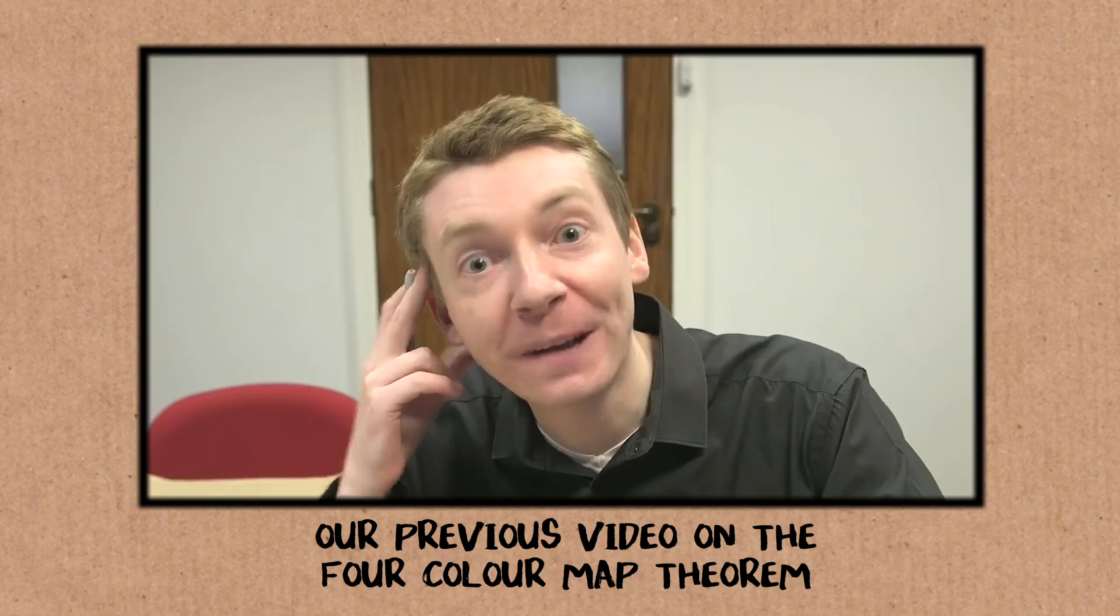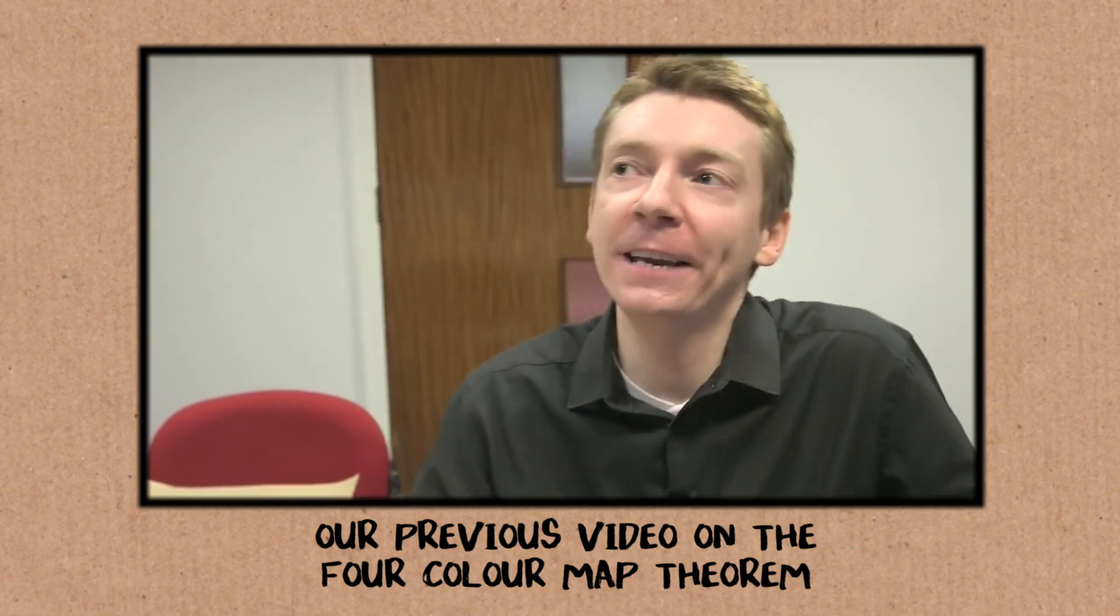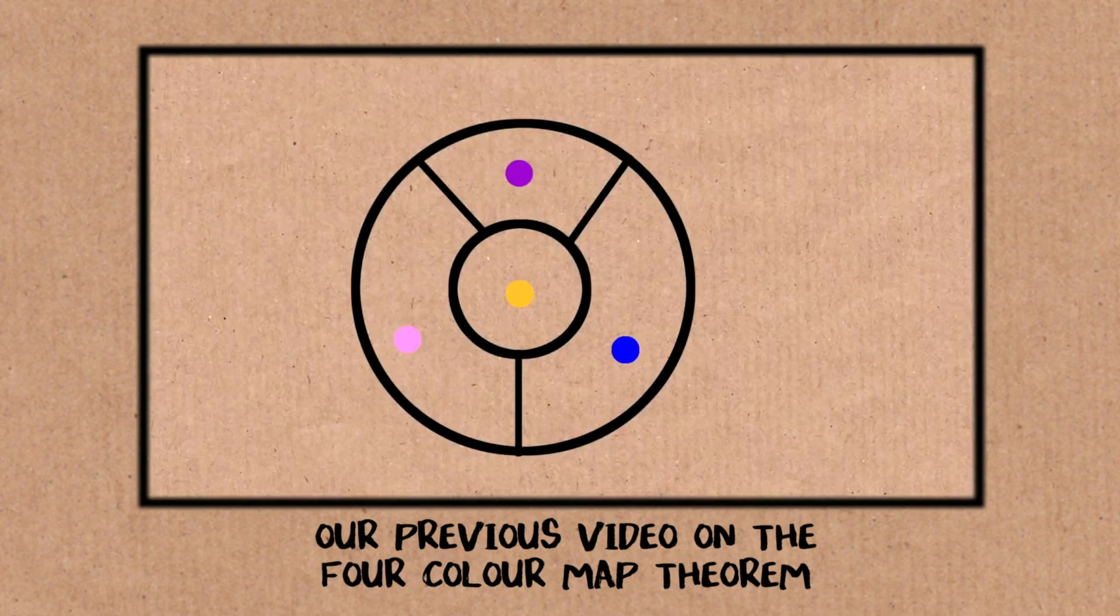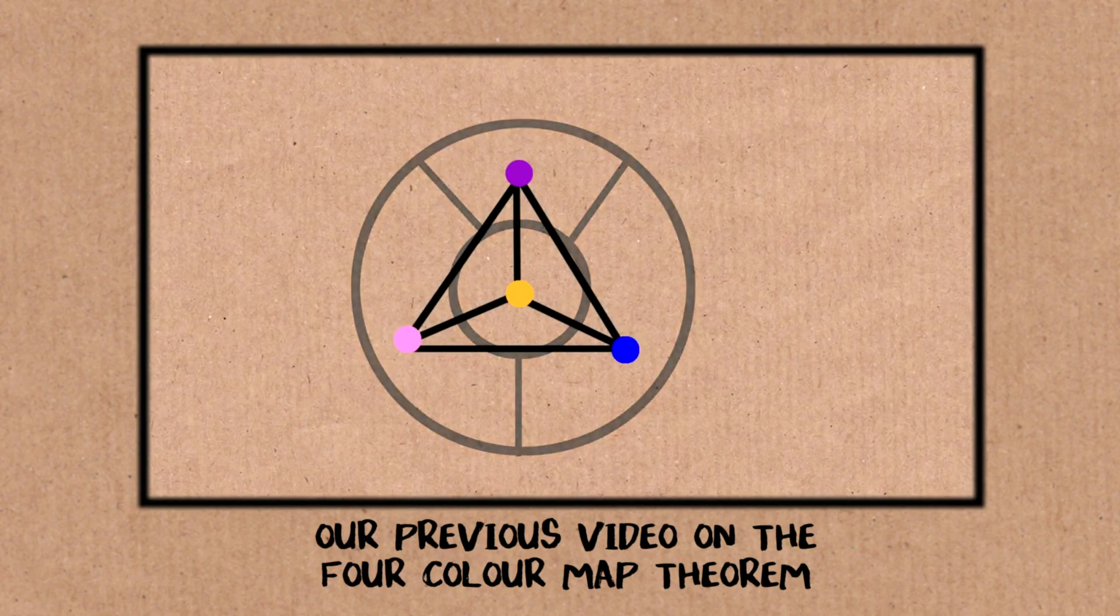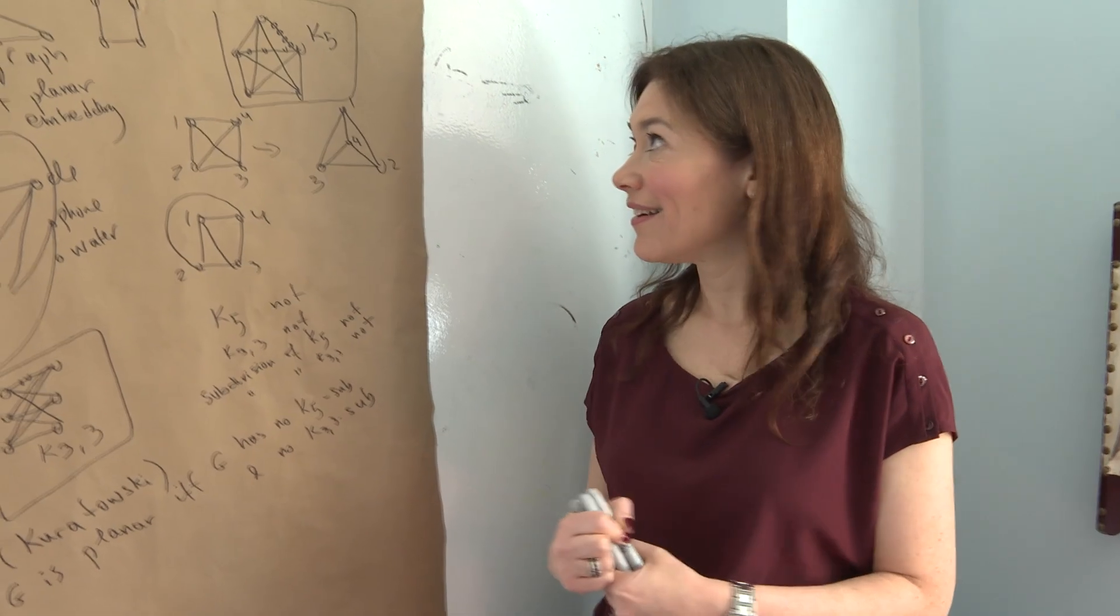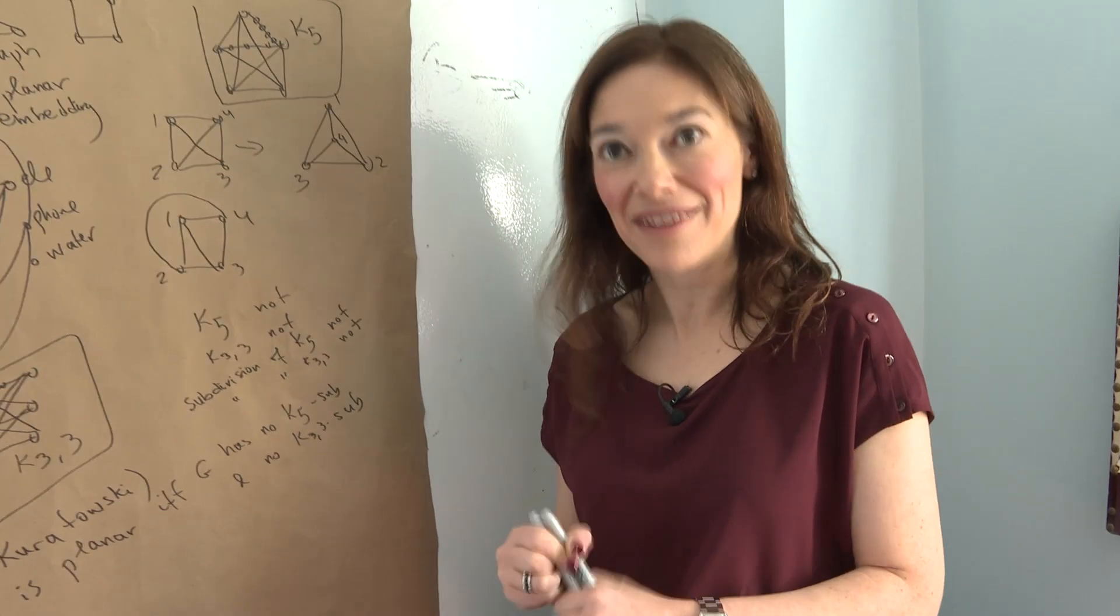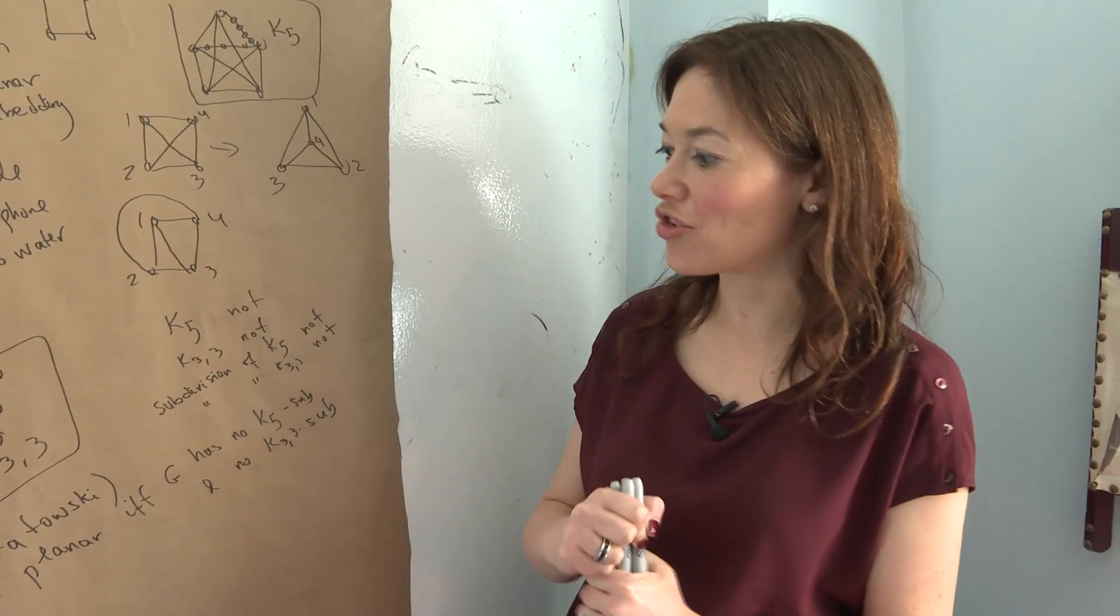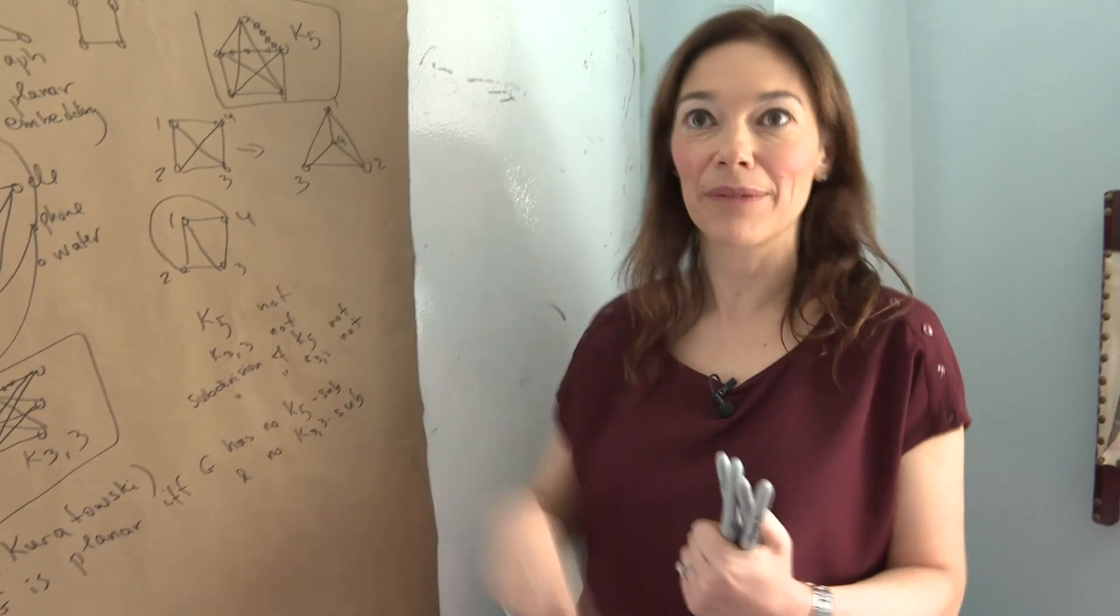It was actually conjectured by a cartographer in 18 something, 1863 I think, where he said if I have a map and I want to color the countries so that adjacent countries get different colors, how many colors do I need? I seem to be noticing that four is always enough. And the answer is yes, four is always enough.